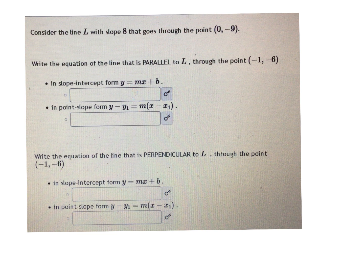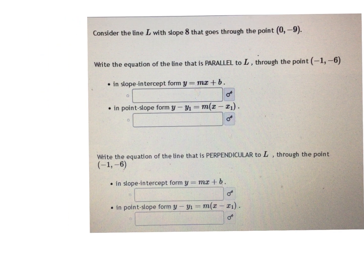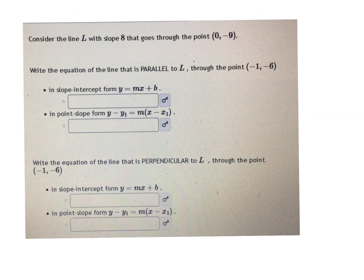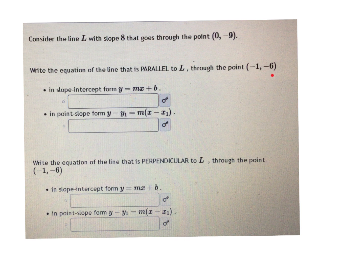So what we're going to do is find two equations: the equation of a line that is parallel to the line L that goes through the point (-1, -6), and then one perpendicular to this line through the same point.